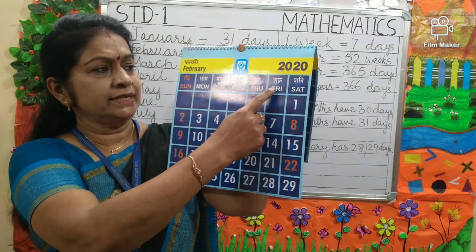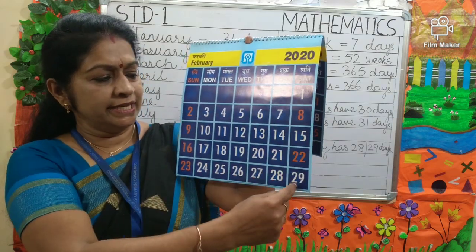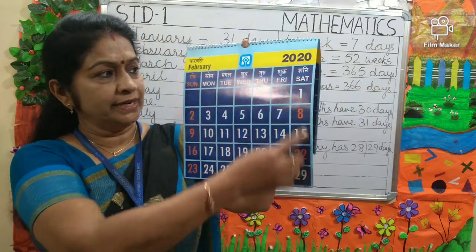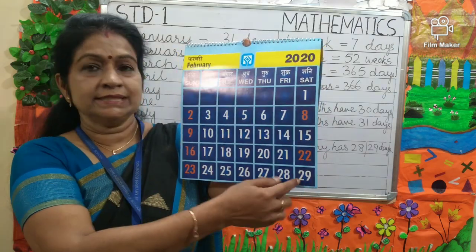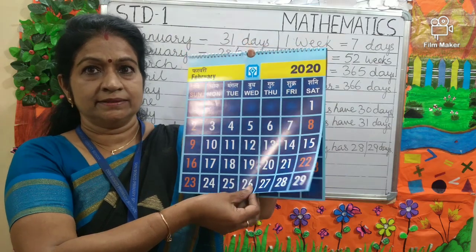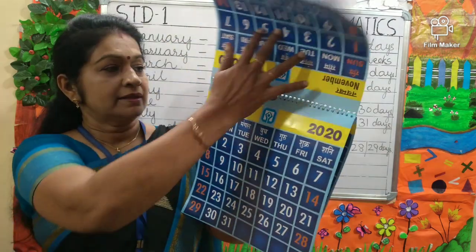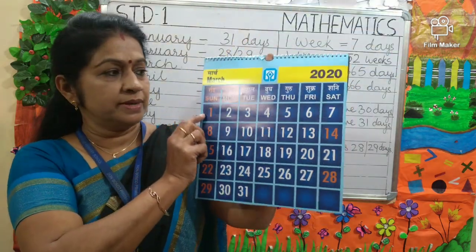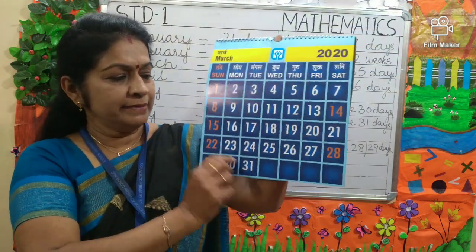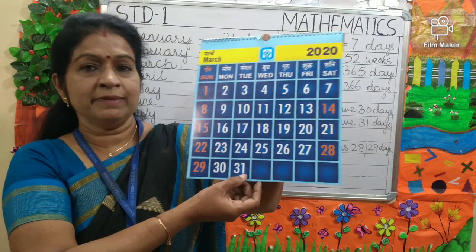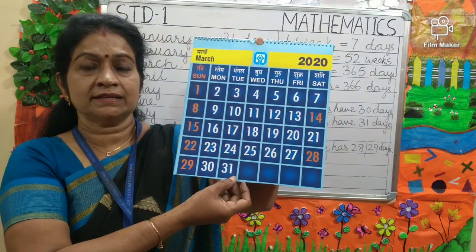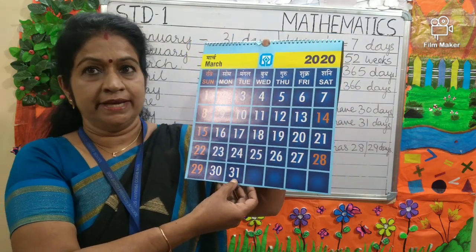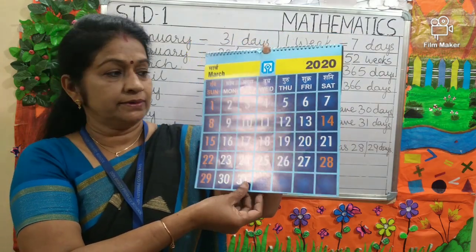Can you say which day is 29th of February? It is Saturday. Next is March. Can you tell me how many days March has? It has 31 days.